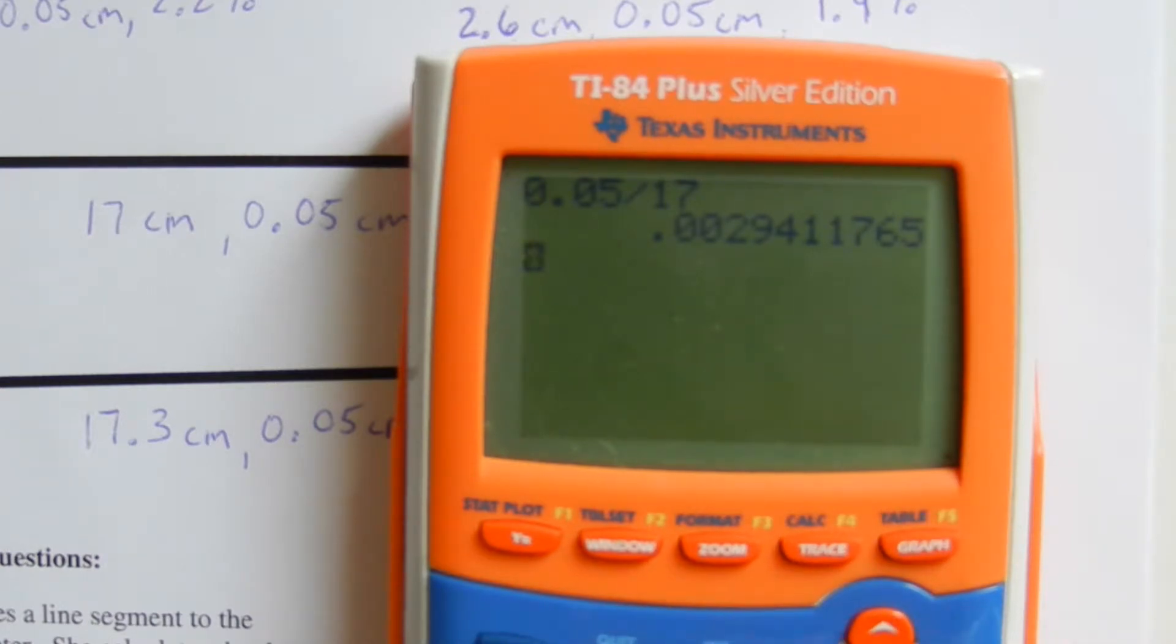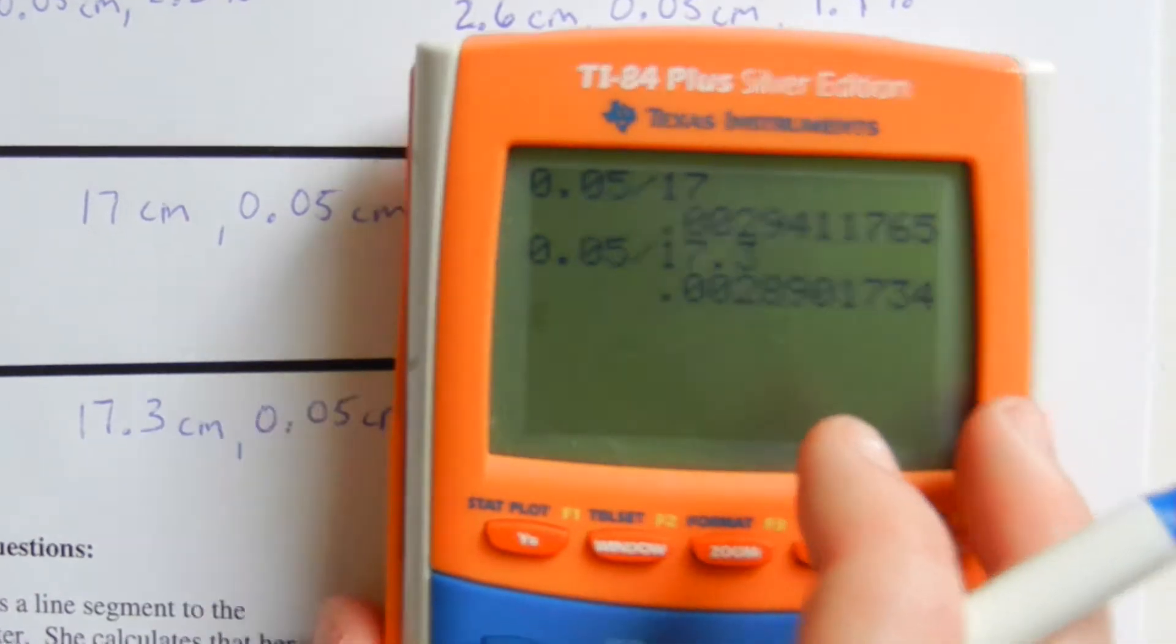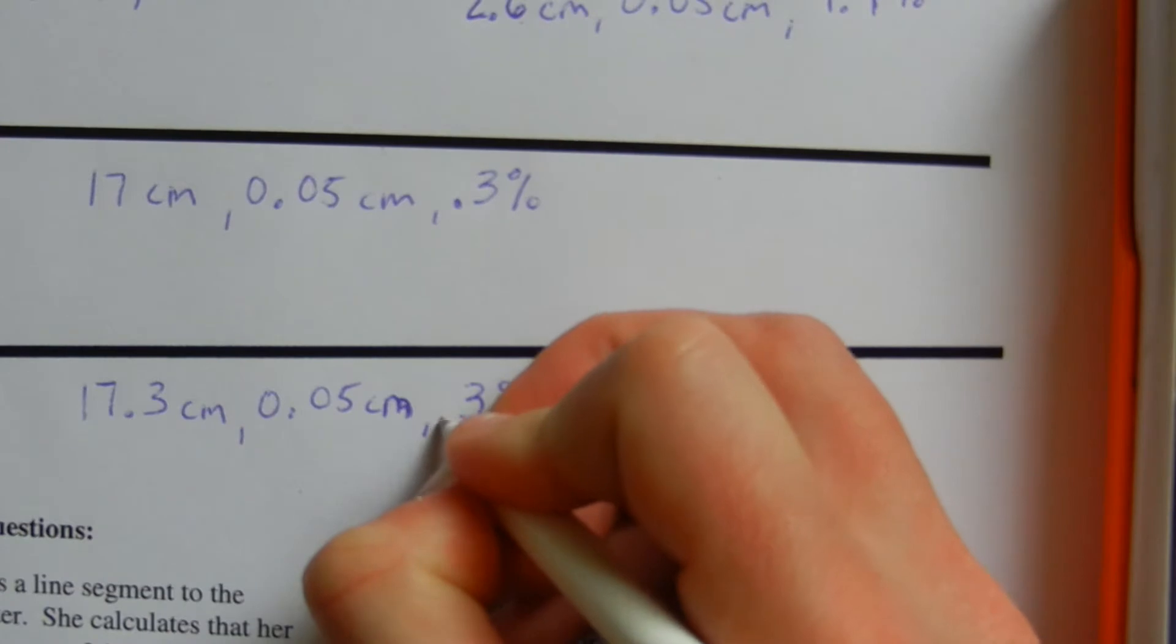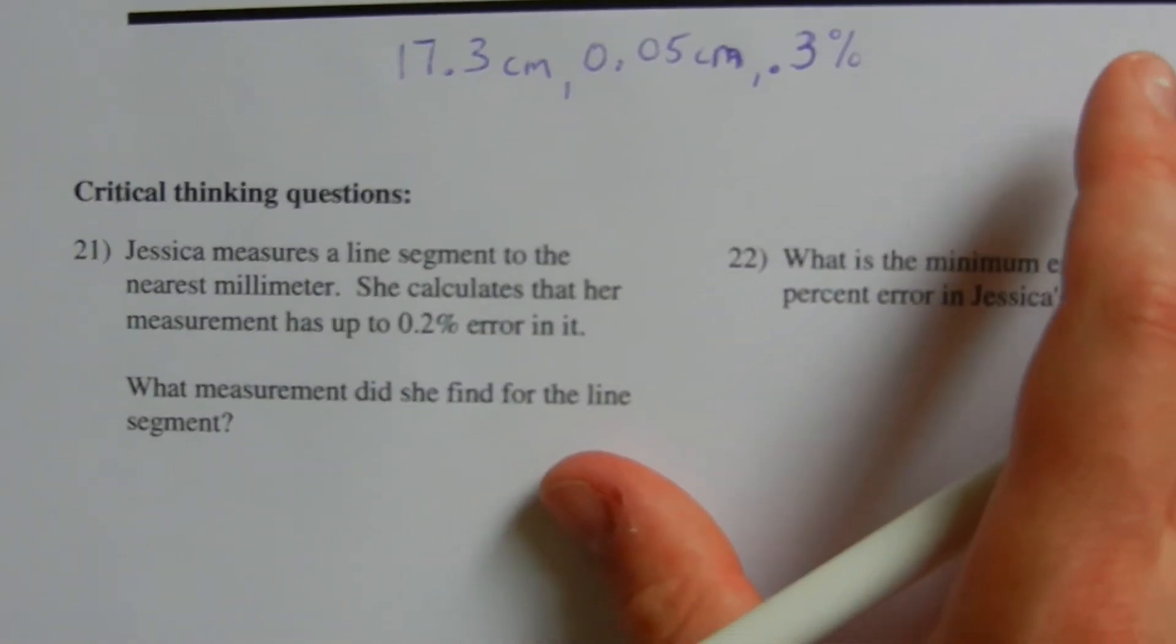And in number 20, we will also get approximately 0.3%. Now, we have our critical thinking questions.